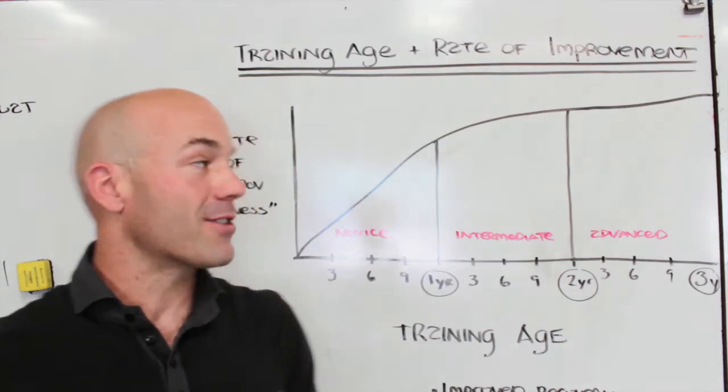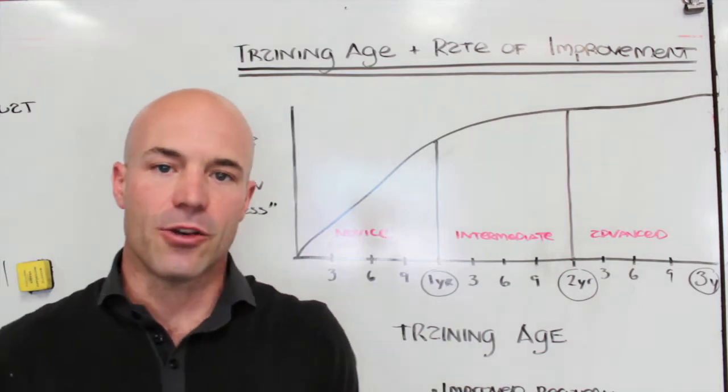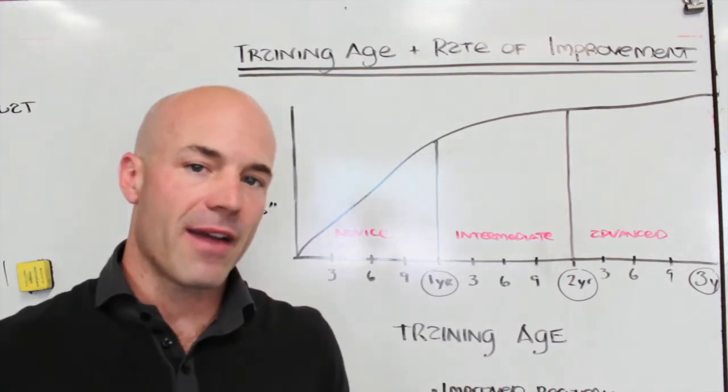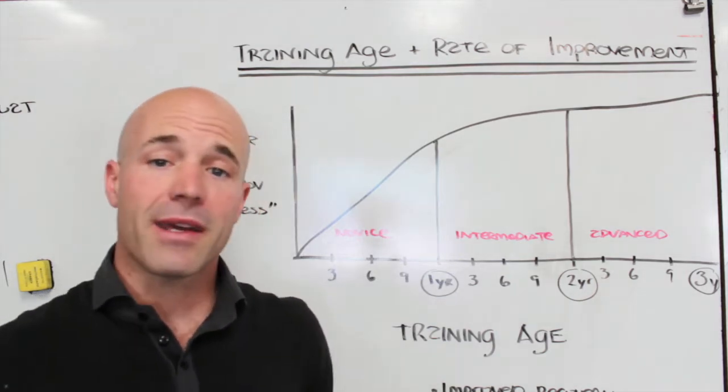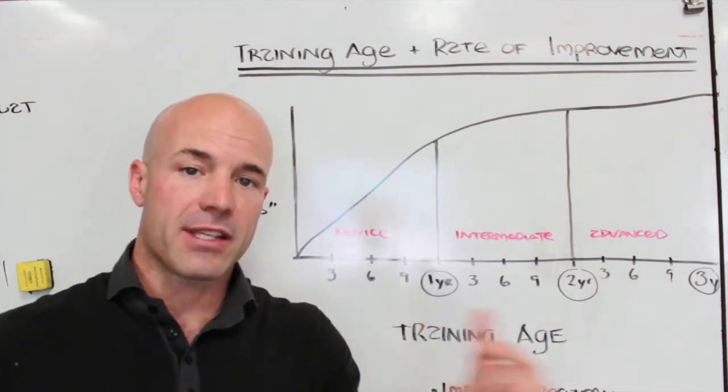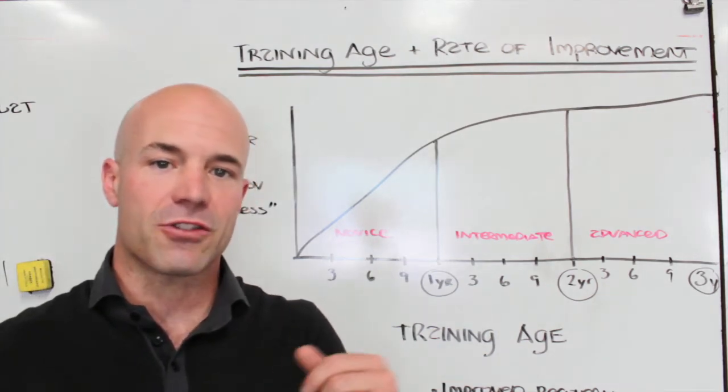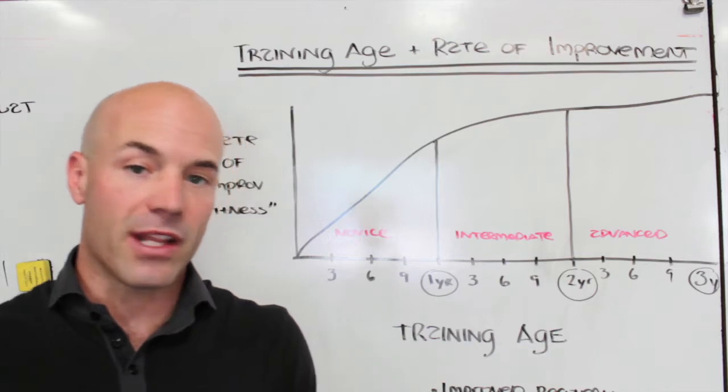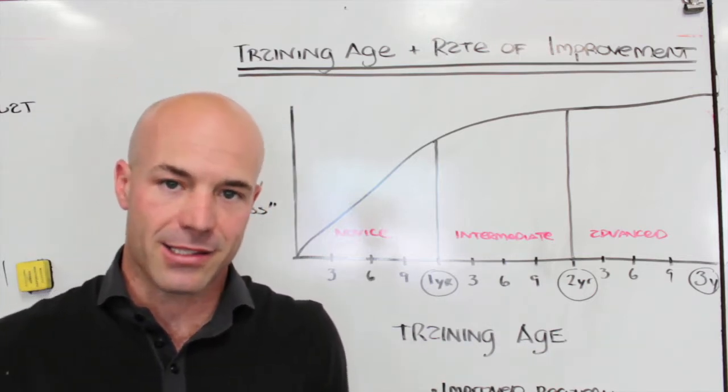How this relates to rate of improvement, we see this a lot with in-house athletes. A new athlete will come to us, never have any experience in a strength and conditioning facility or gym, or they come from an endurance background. They step in this gym and every day they train, they are getting stronger and stronger, regardless of the programming. They see 20, 30, 40, sometimes 50 pound jumps in one rep maxes.